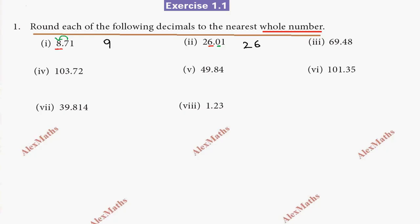When we round off, we underline the digit. The digit next to it on the right is 4. Since 4 is less than 5, we keep the value 69 — do not increase. Do not round up.